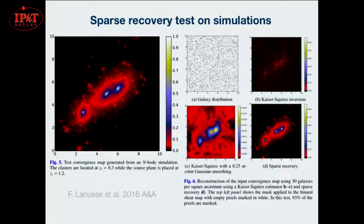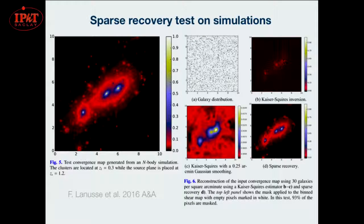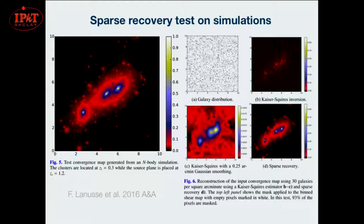Here's a nice result from Francois's paper introducing the Glimpse algorithm. This is a convergence map extracted from an N-body simulation — consider it ground truth — with some clusters at redshift 0.3. It's a simulated galaxy distribution binned into a map at such high resolution that 93% of the pixels are actually empty. Applying Kaiser-Squires directly gives something that doesn't look anything like the original, though you can get something more recognizable by smoothing with a wide Gaussian kernel. This is in contrast to solving the equation with sparse regularization, where straight away you get something that looks much better.